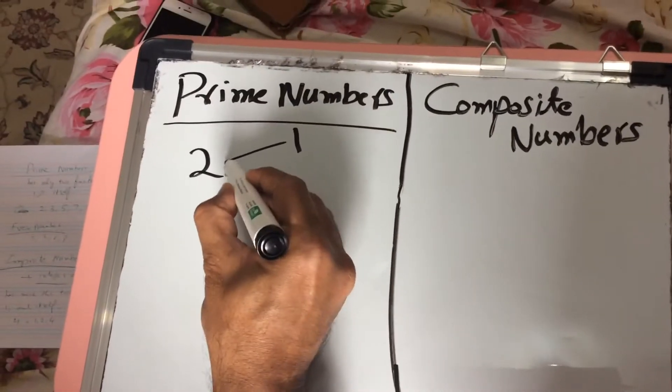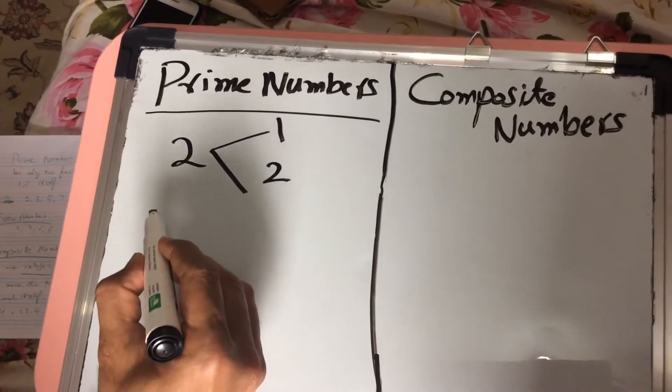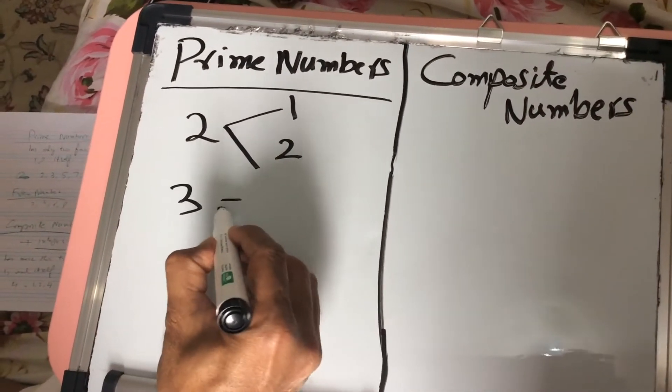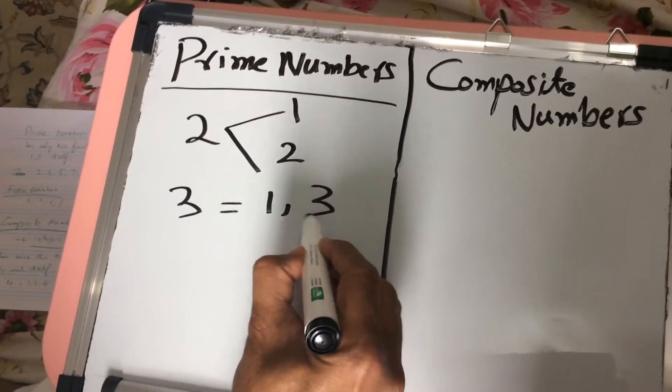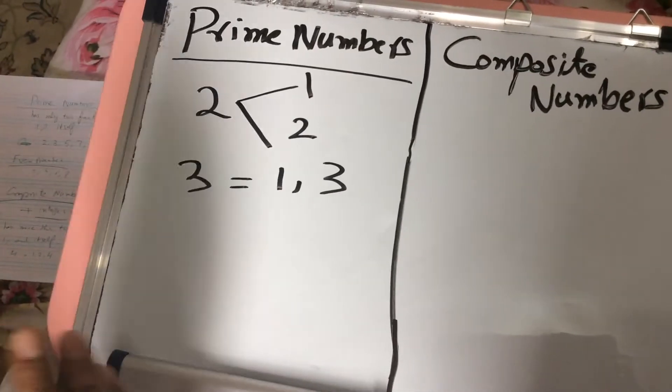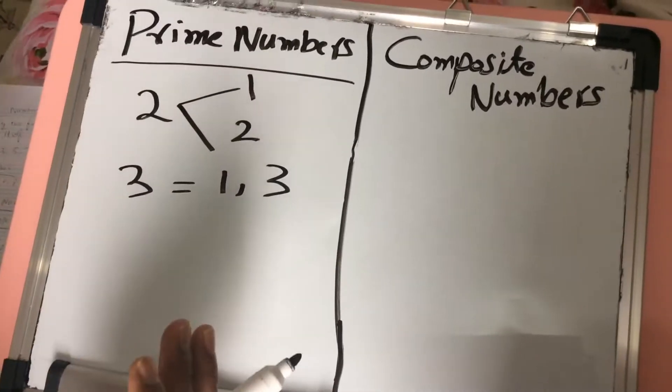1 and itself. So it is a prime number. Another example is 3, which is also a prime number. How many factors does it have? Only 2: 1 and 3. So any number that has only 2 factors is called a prime number. Itself and 1.